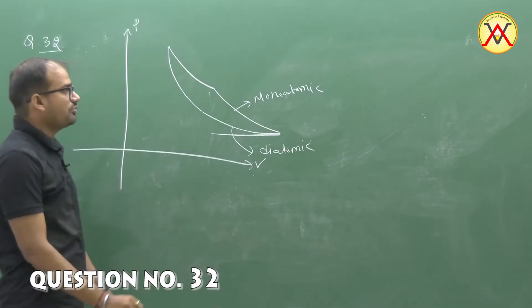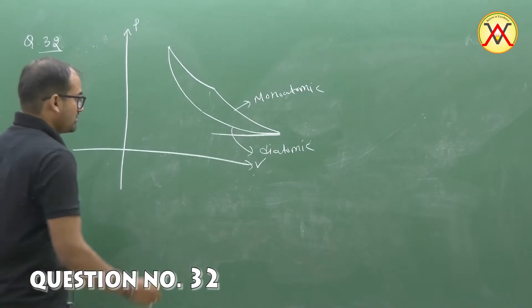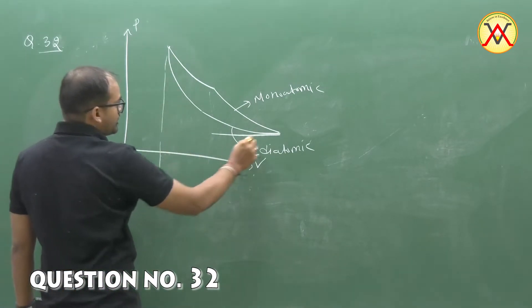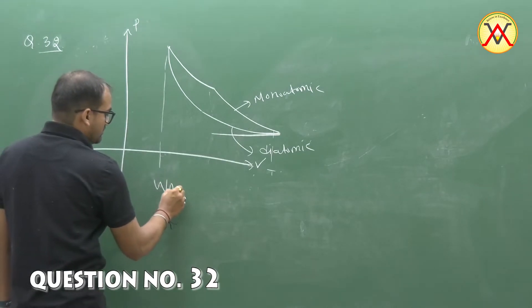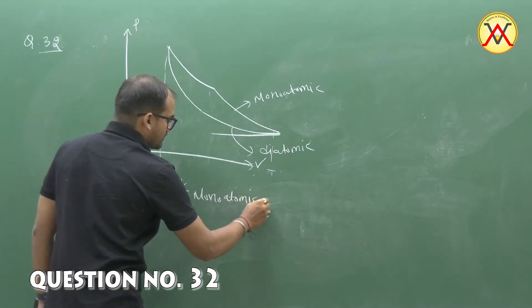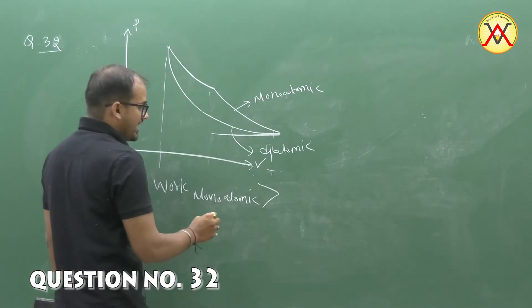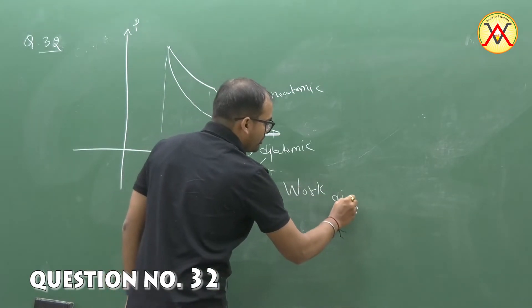The slope of monatomic gas for adiabatic process is larger than diatomic gas. That means, according to the area concept, work done in case of monatomic gas should be more than work done in case of diatomic gas.